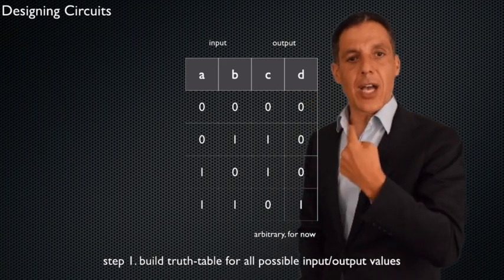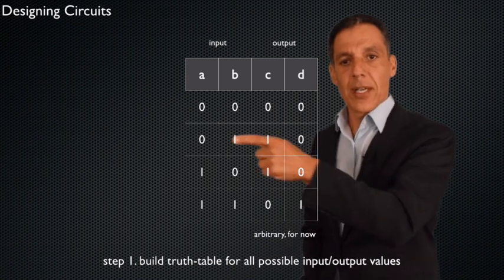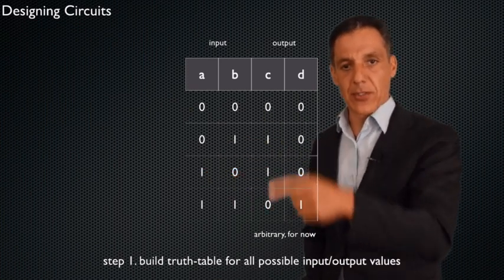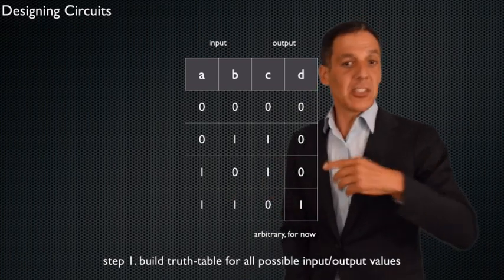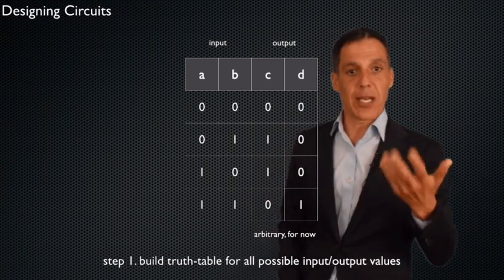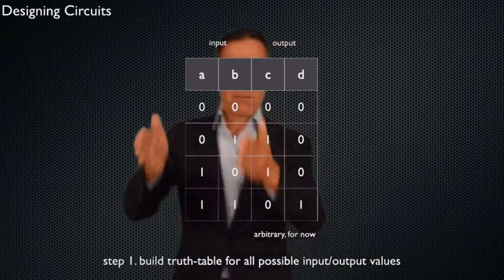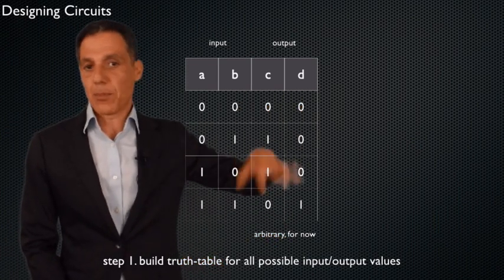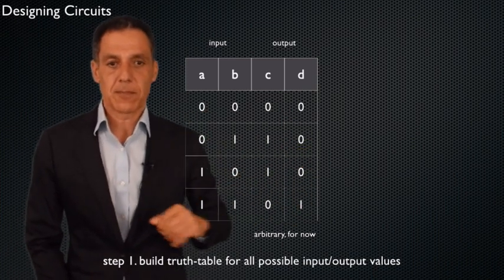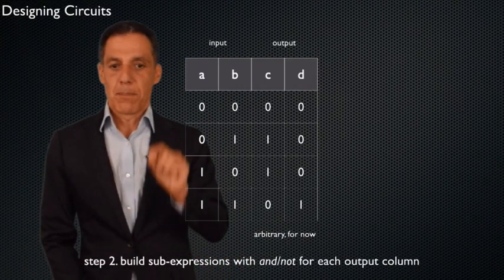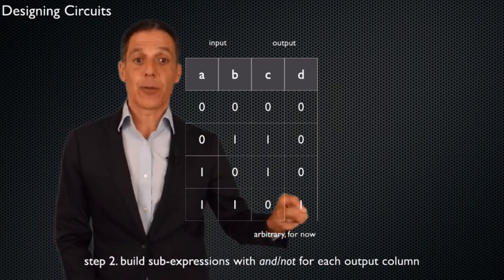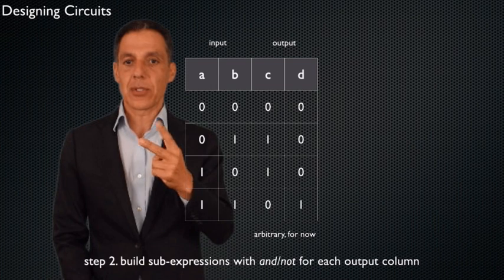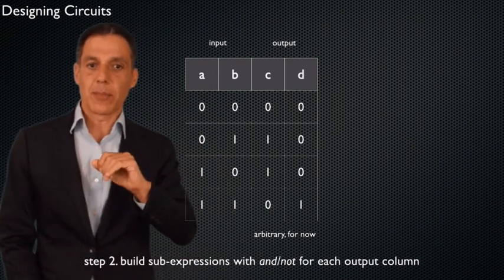I'm determining the outputs — this is the nature of the computation. C should be one when A is zero and B is one, or when A is one and B is zero, and zero otherwise. D should be one only when A is one and B is one. That's the computation. So now I have a truth table. Step two: build sub-expressions with AND and NOT for each output column. I have two output columns here, and you can only use AND and NOT — no ORs yet.